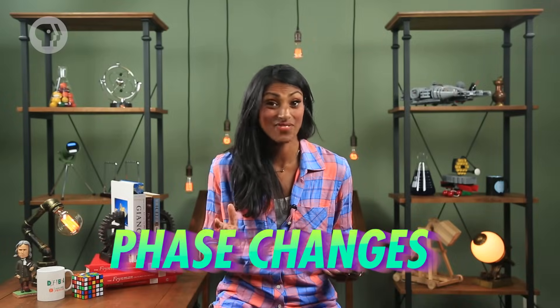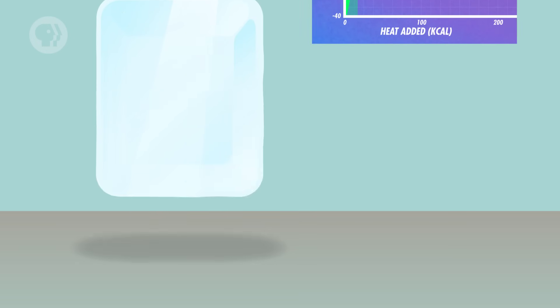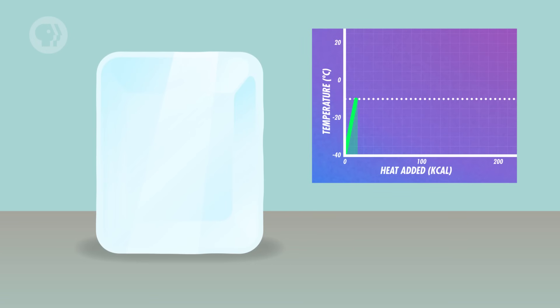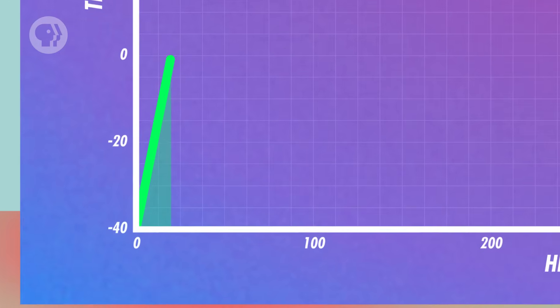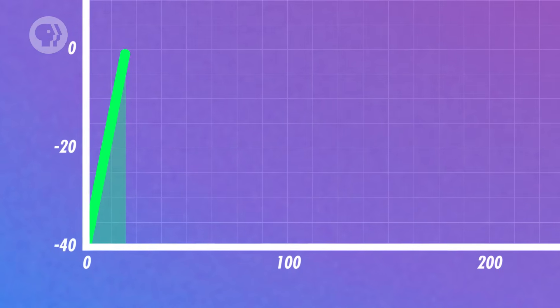But there's another factor that affects the way heat flow relates to temperature, and that is phase changes. Let's say you have a kilogram of ice at negative 10 degrees Celsius and standard atmospheric pressure. Then you start adding heat to it. What happens? Well, we know that the ice's temperature will start to increase. But at a certain point, when the temperature hits zero Celsius, it'll stop increasing, because the ice is melting.